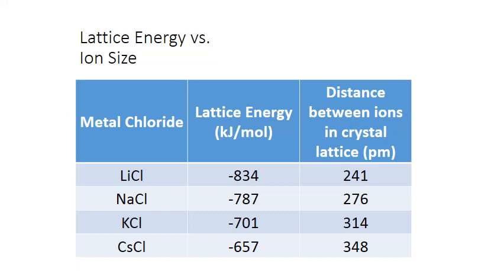In fact, the closer the ions can get to each other, the more energy that's released. Here we have a series of lattice energies for metal chlorides formed with the alkali metals in column one of the periodic table. Lithium is the smallest atom in the column, while cesium is the largest. We can see this in the distance between the ions in the crystal lattice, with the smallest interatomic distance occurring with the lithium chloride crystal and the largest with cesium chloride.